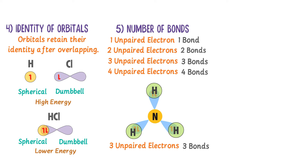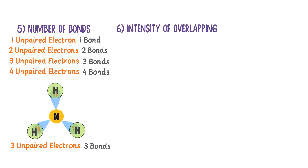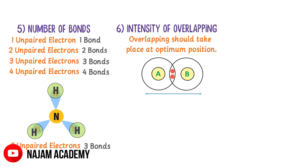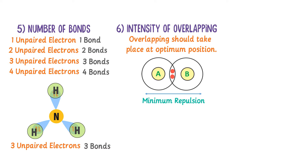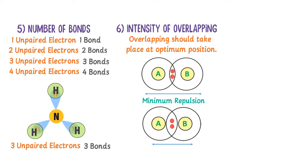The sixth point of VBT is the intensity of overlapping. It teaches that overlapping between orbitals should take place at an optimum or suitable position. For example, consider the overlapping of two atomic orbitals of atoms A and B. The orbitals should overlap at a position where the repulsion between the two nuclei is minimum. In the wrong case, the two orbitals overlap so closely that the two nuclei almost touch each other — this is incorrect. The right case is overlapping at the optimum position. Thus, VBT teaches us the importance of the intensity of overlapping.